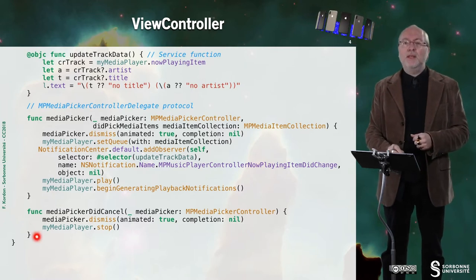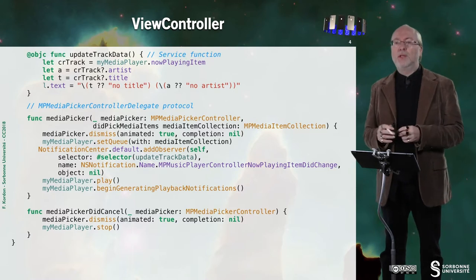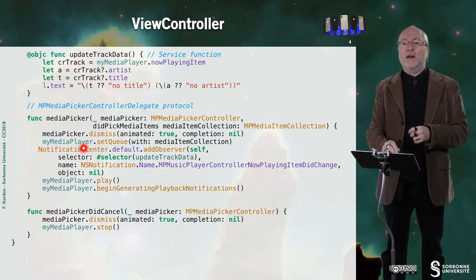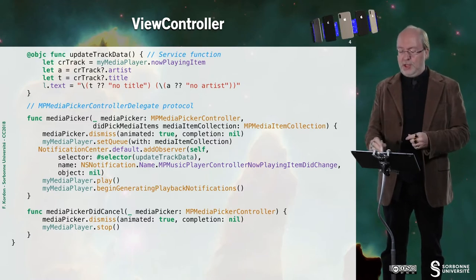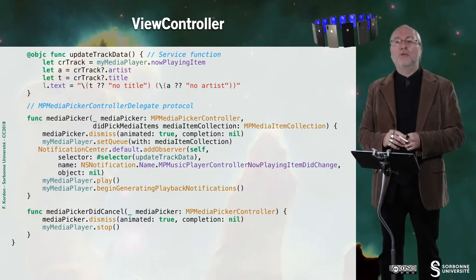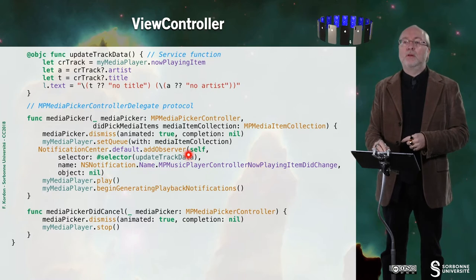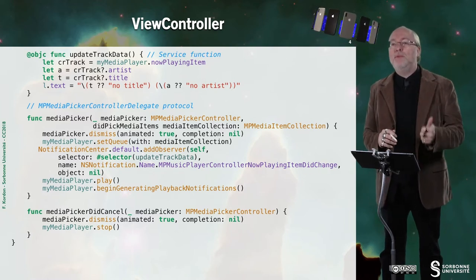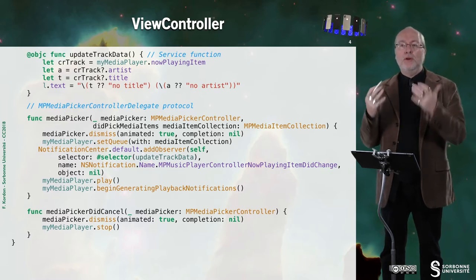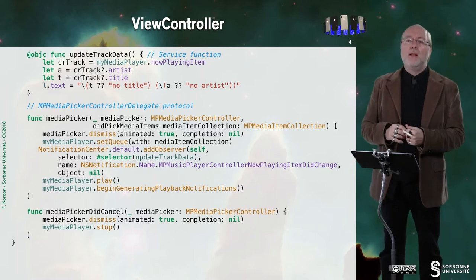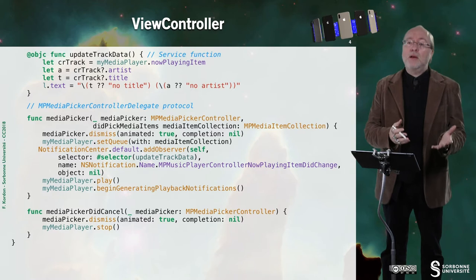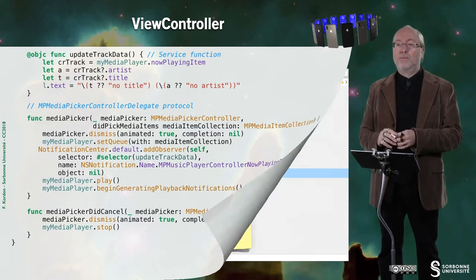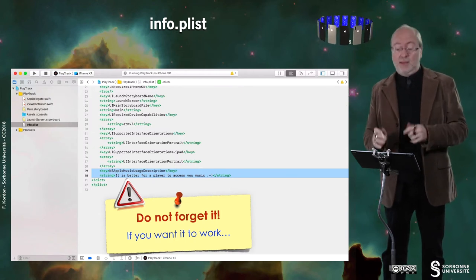I have my two delegate methods. If the user did cancel, I just dismiss the picker. Otherwise, I set the queue with the media item collections I got from the function call. Then I add one observer and listen to one event, which is MPMusicPlayerControllerNowPlayingItemDidChange, because that is the only information I want to track. Then I request to play, and I also request my media player to generate playback notifications. Remember that in the info.plist, I must set that I am using the media player, otherwise it will not work at all.